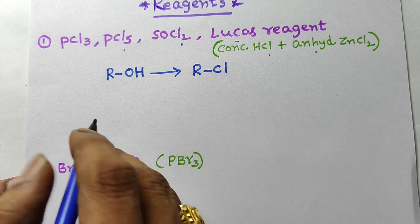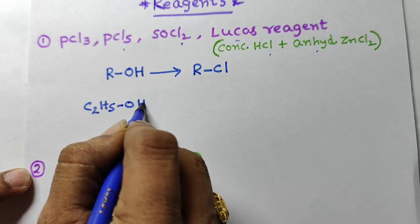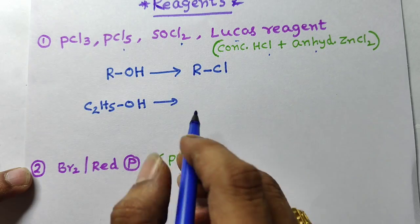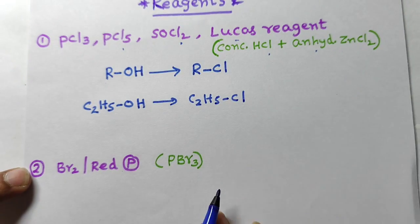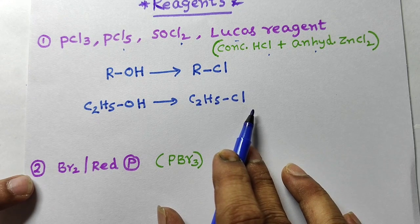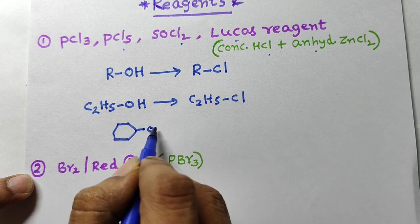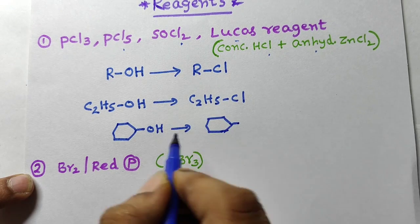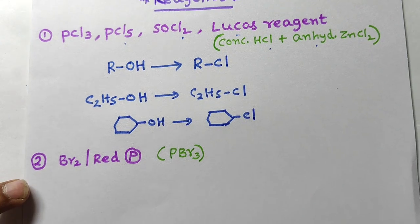Let us take one example. C2H5OH — whenever you take any of these reagents, the OH group is replaced by chlorine, so ethyl alcohol is converted into ethyl chloride. One more example: let us take cyclohexanol. Here the OH group is replaced by chlorine to give cyclohexyl chloride.